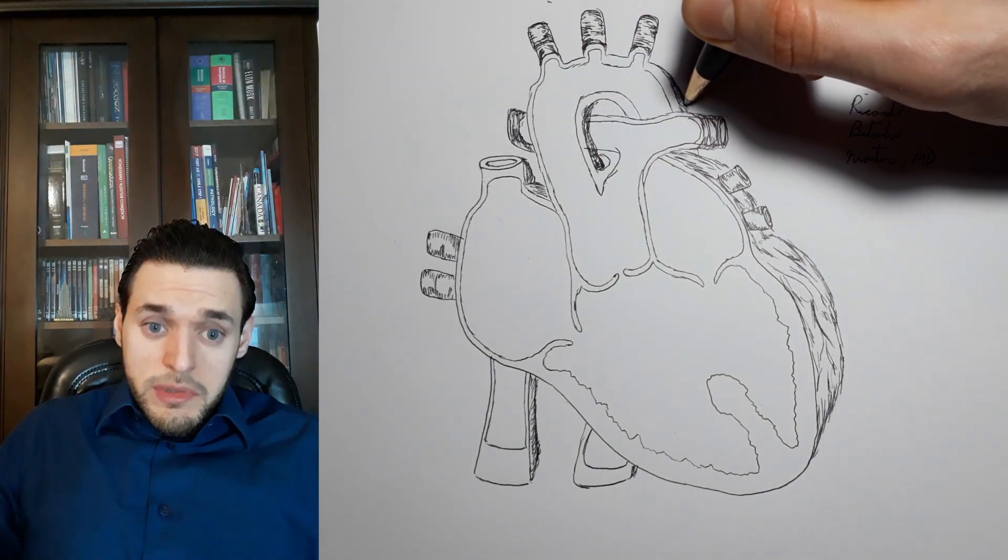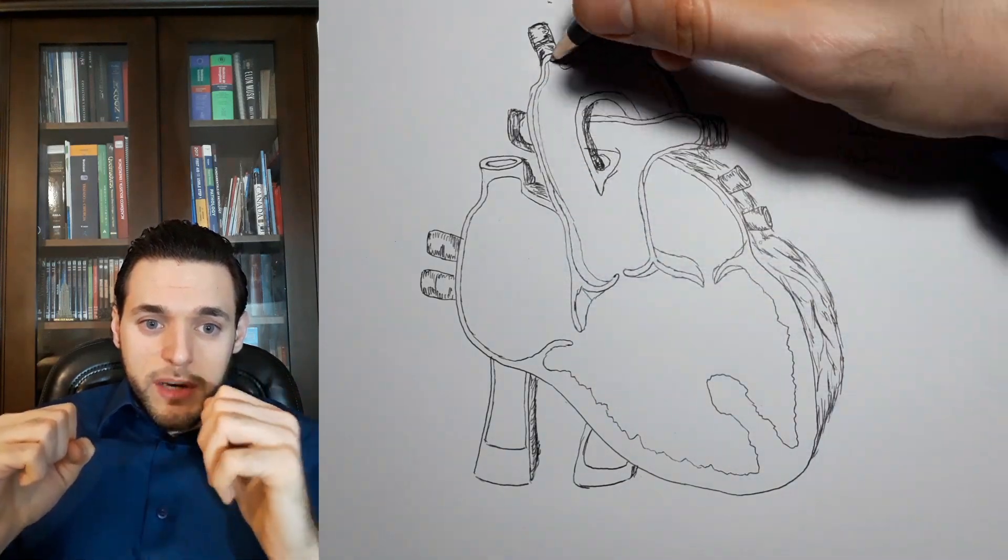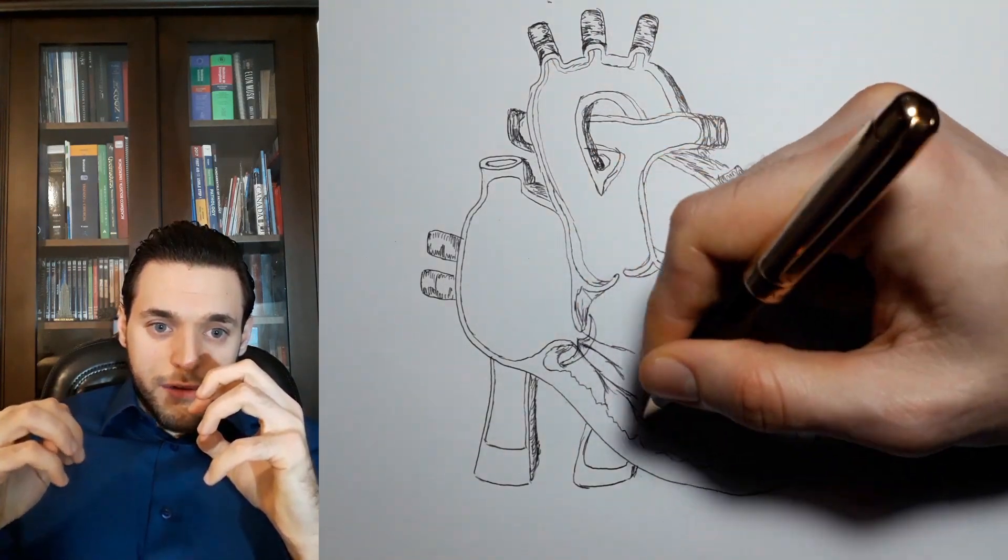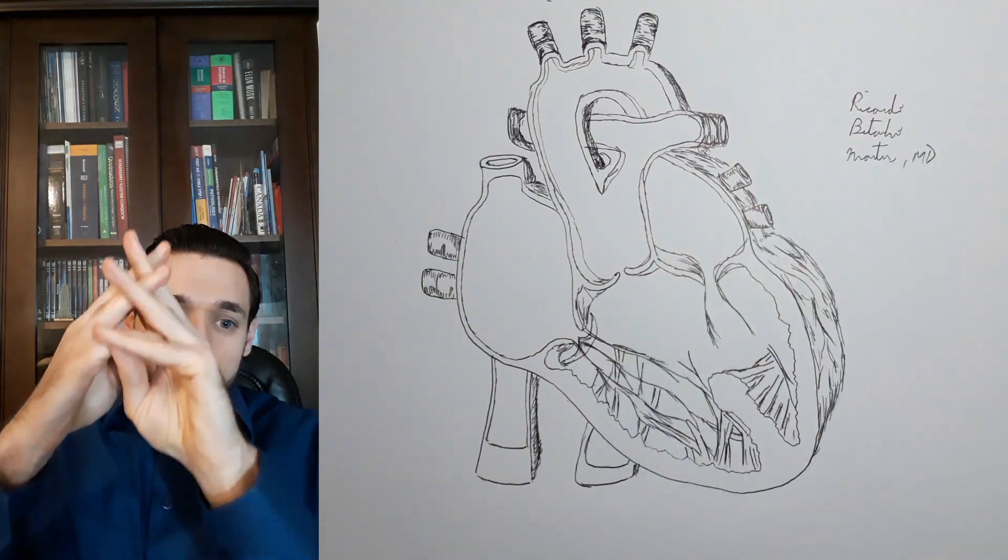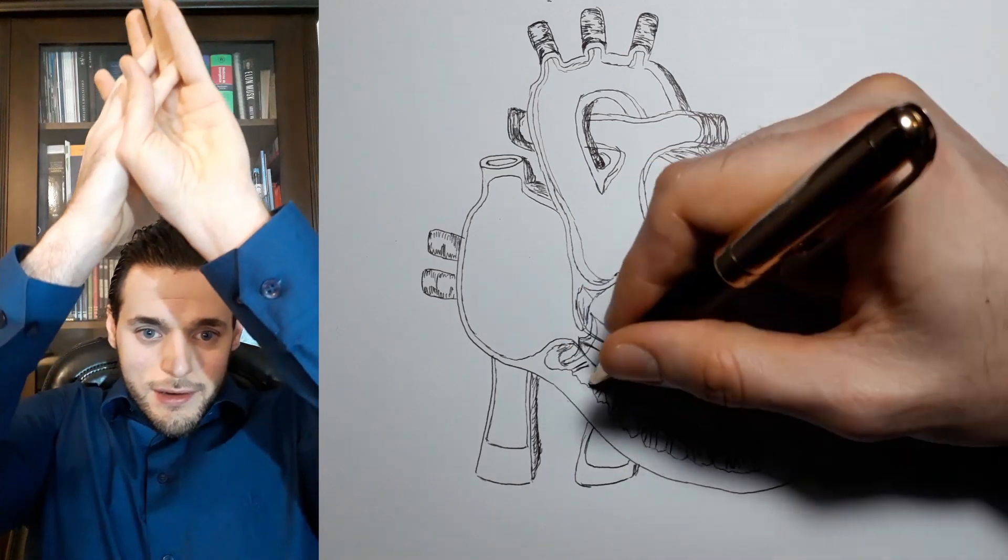This is a problem because oxygenated blood coming from the left ventricle and deoxygenated blood from the right ventricle have to flow through the same vessel causing them to mix along the trajectory.